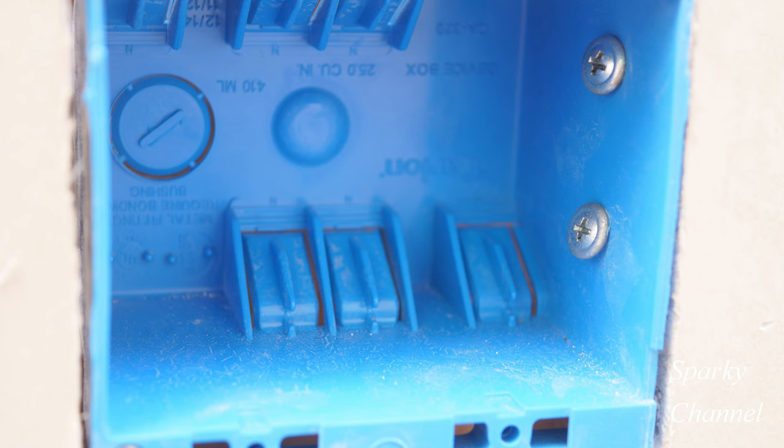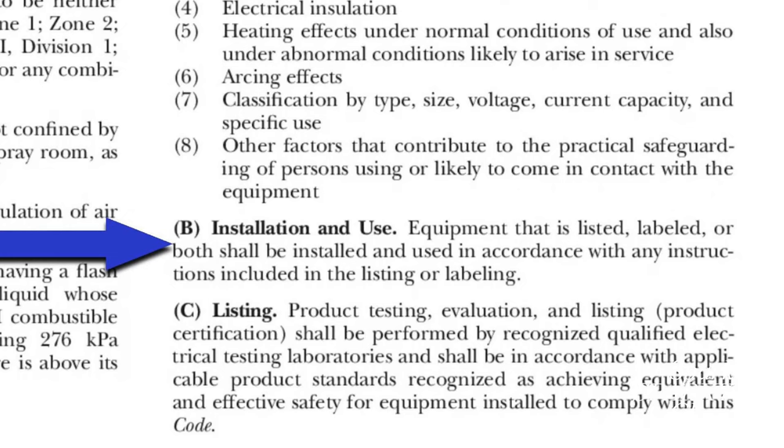Well, let's take a look at the code itself. So here we are now at Article 110.3b and it says installation and use equipment that is listed, labeled or both shall be installed and used in accordance with any instructions included in the listing or labeling.